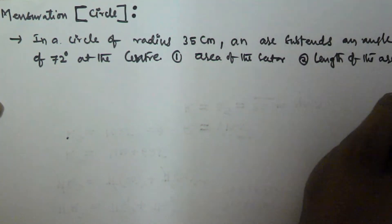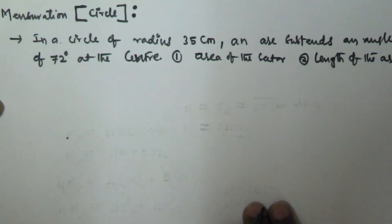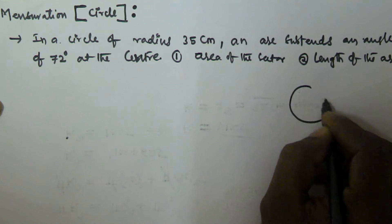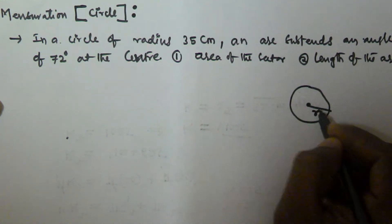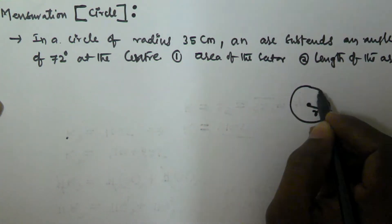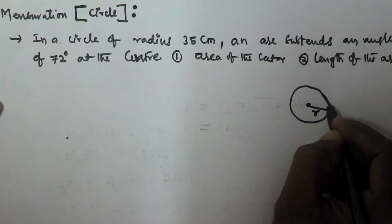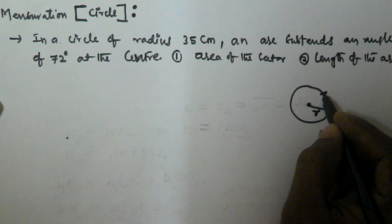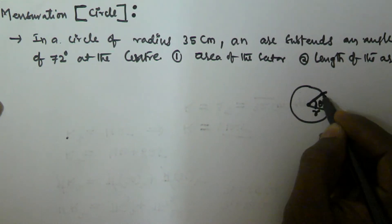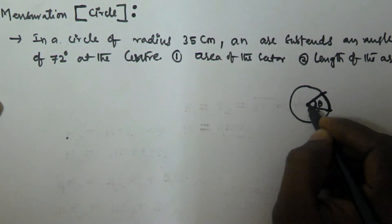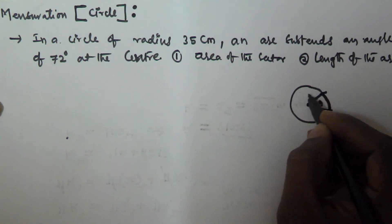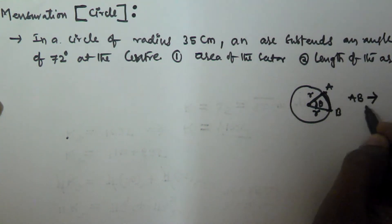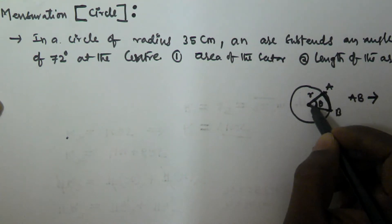Before solving this problem, I will explain the concepts related to the sector and the arc. The arc is actually some portion of the circumference. Let's say this is the arc from point A to point B — so AB is the length of the arc, which is some part of the circumference, and this arc AB makes some angle theta at the center.